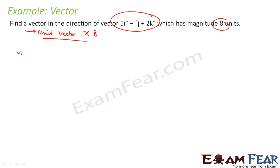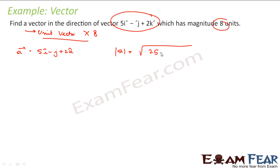Let us find a unit vector. So let us suppose my vector A is 5i minus j plus 2k. To find the unit vector of A, I have to find the magnitude of this. This becomes root of 5 squared, that is 25, plus minus 1 squared, that is 1, plus 2 squared, that is 4. So this becomes root of 25 plus 1 plus 4, which is root 30.